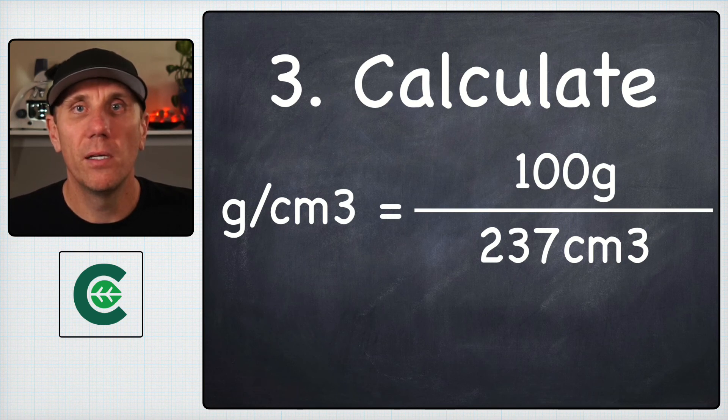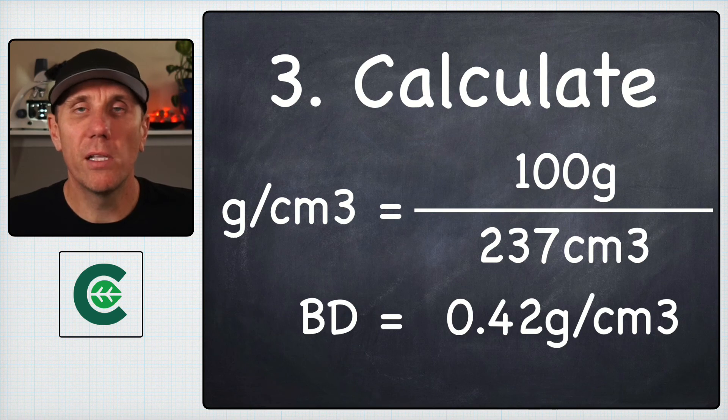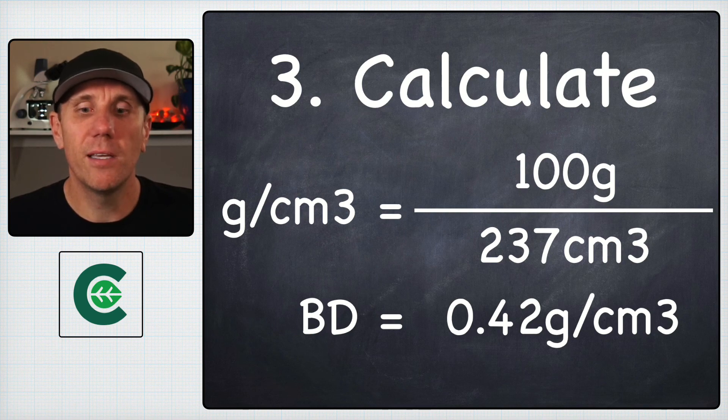It's pretty straightforward math. You just divide it, so the bulk density of this soil would be 0.42 grams per cubic centimeter. Hope this helps, thank you.